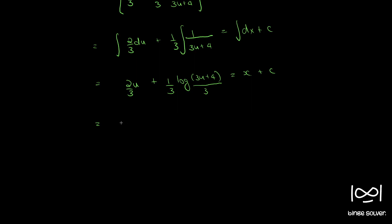We multiply throughout by 9 and we get 6u plus log of 3u plus 4 equal to 9x plus c1.